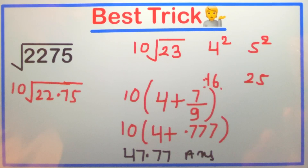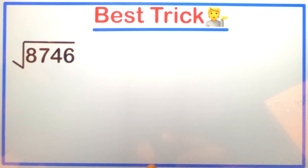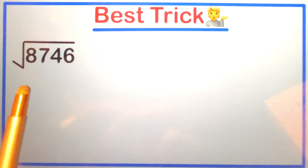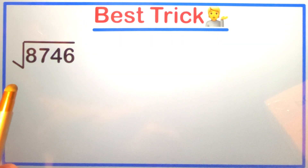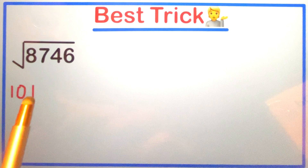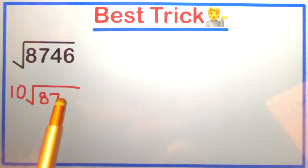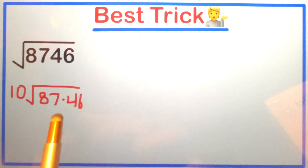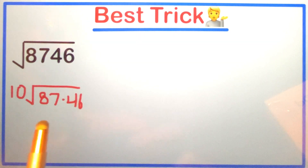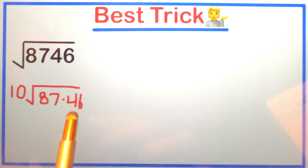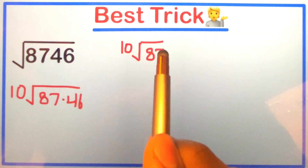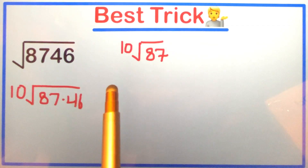Let's apply the same trick to the next question. After two digits from the right we put a point, then write 10 outside, so it becomes 10 × √87.46. Now we write the approximate value — since the decimal part is less than 5, we write it as 87. So we have 10 × √87.